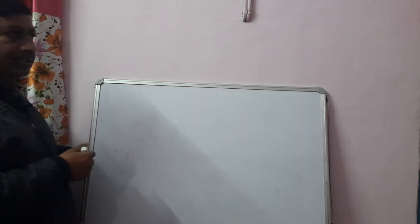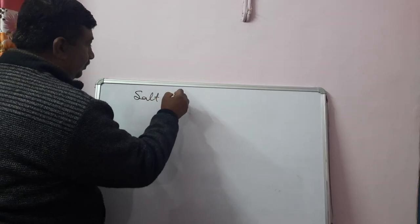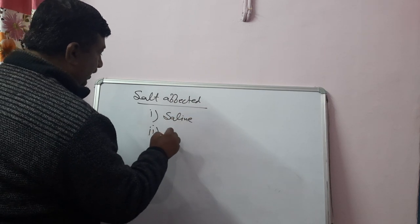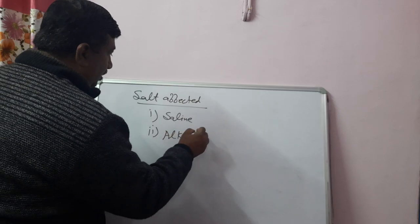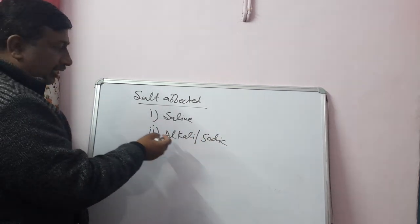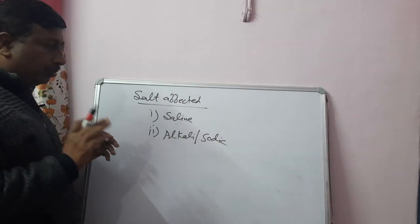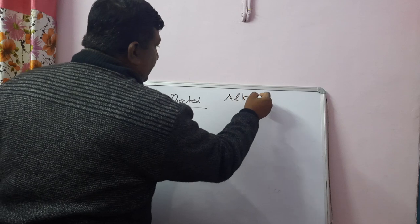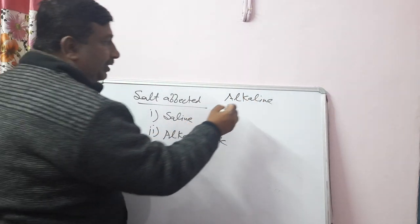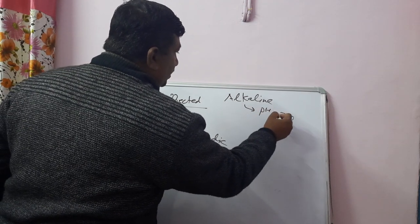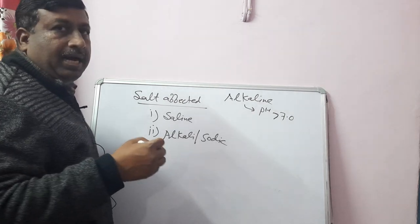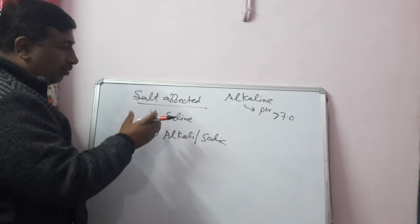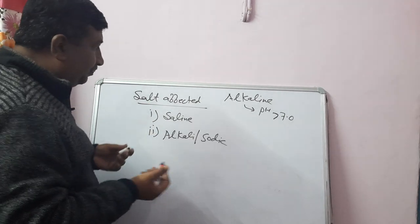Understanding neutral salt, basic salt, and acidic salt is essential to understanding saline soil and alkali soil. In general, salt-affected soils are classified into two types: saline soil and alkali or sodic soil. In old literature, alkali and sodic are used interchangeably. The term 'alkaline' is different — alkaline simply means pH is more than seven. For salt-affected soils, the term alkali or sodic soil is used.